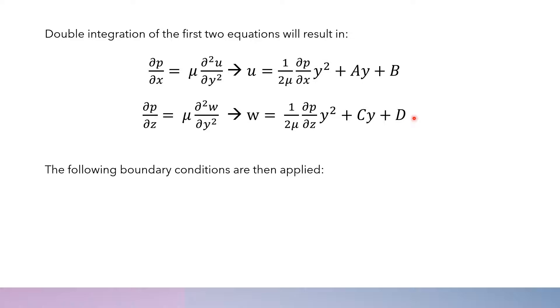We can apply the following boundary conditions: When Y equals 0, U is equal to U1, and remember U1 is the velocity of the lower surface. And W is equal to 0.